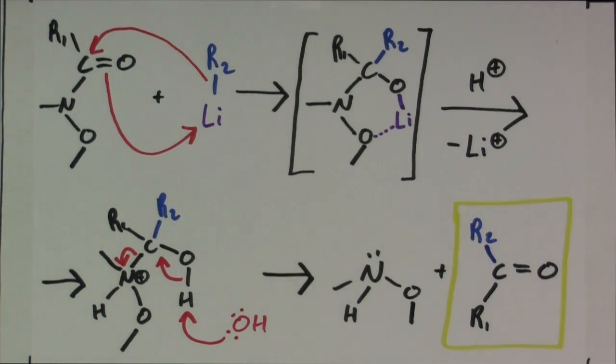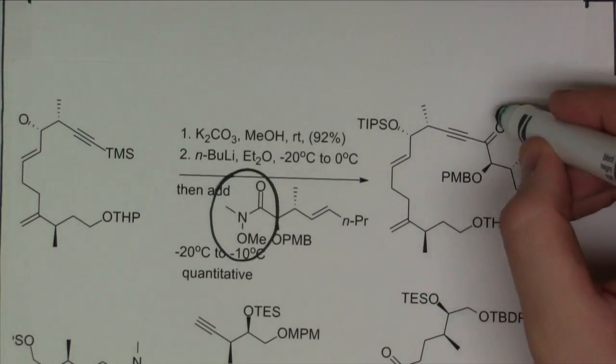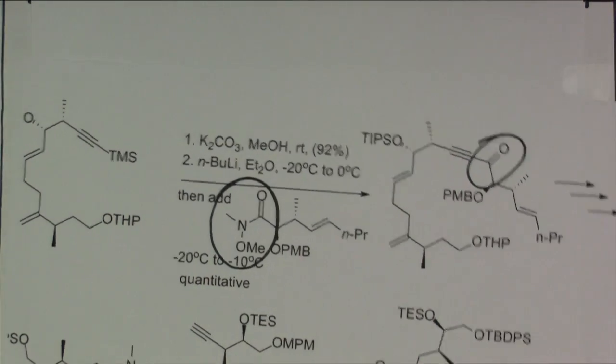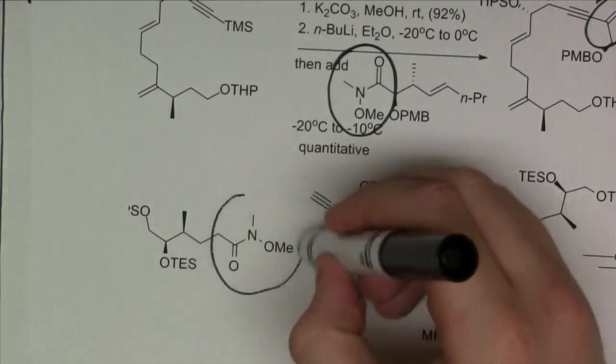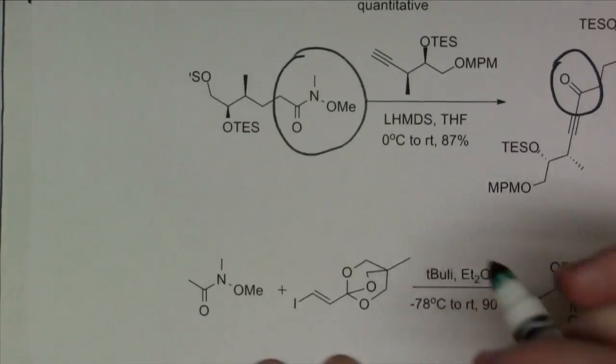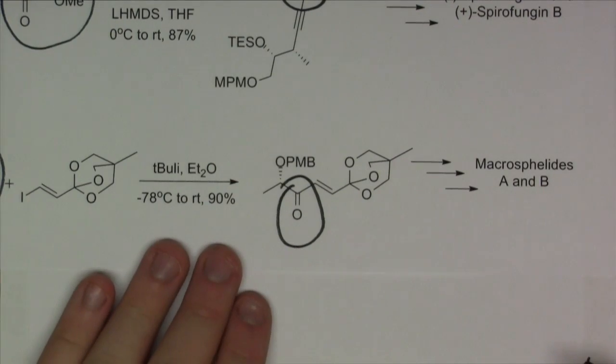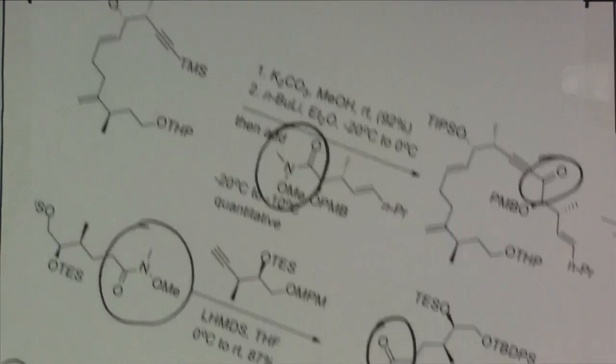It's clear to see. The Weinreb amide has a variety of applications and is very versatile. For example, here are a few key steps involving Weinreb amides in the synthesis of several natural products. Weinreb ketone synthesis can tolerate a wide variety of functional groups elsewhere in the molecule, making the Weinreb amide a very strategic and useful molecule in natural product synthesis.